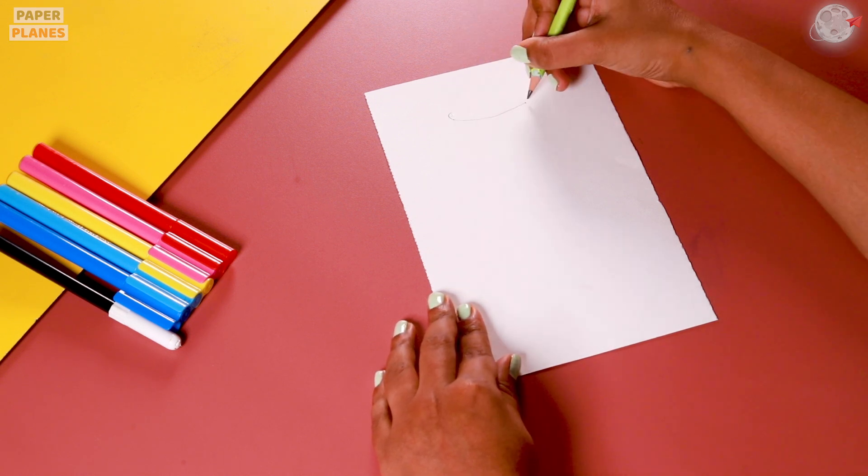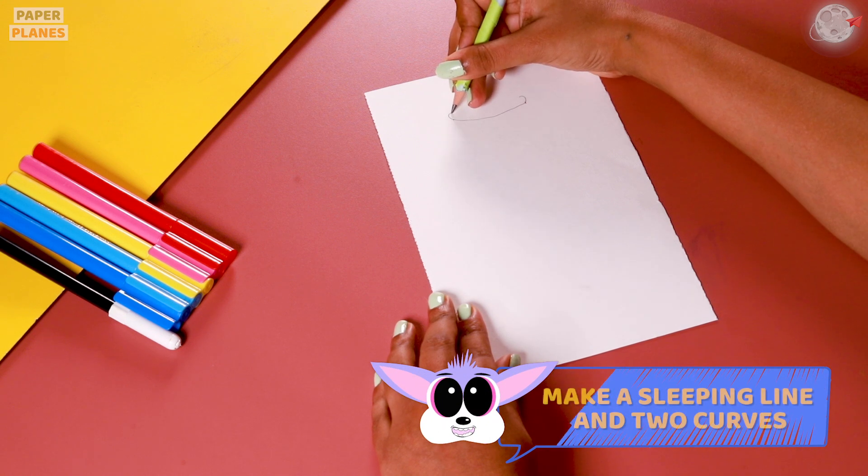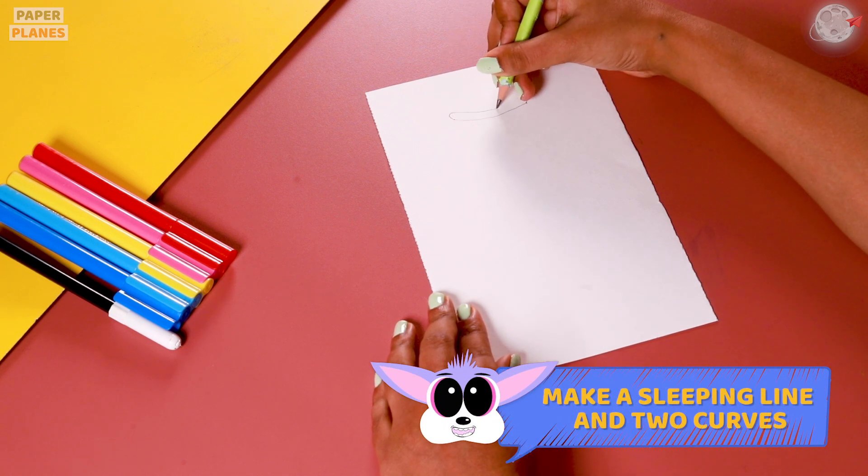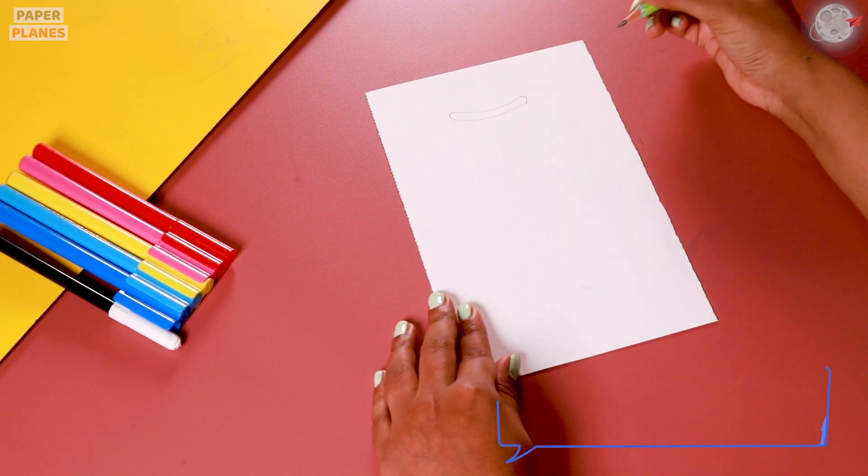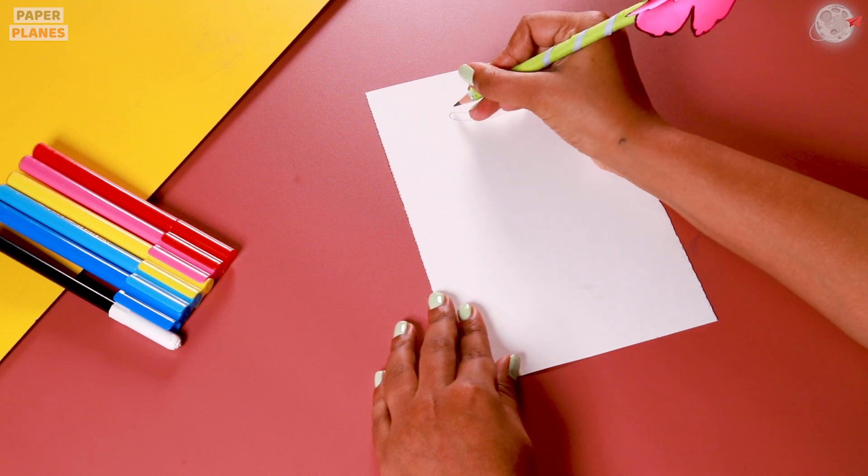Let's make two dots and make a sleeping line. After that, let's make two curves and join them. The next thing we do is make a semi-circle.